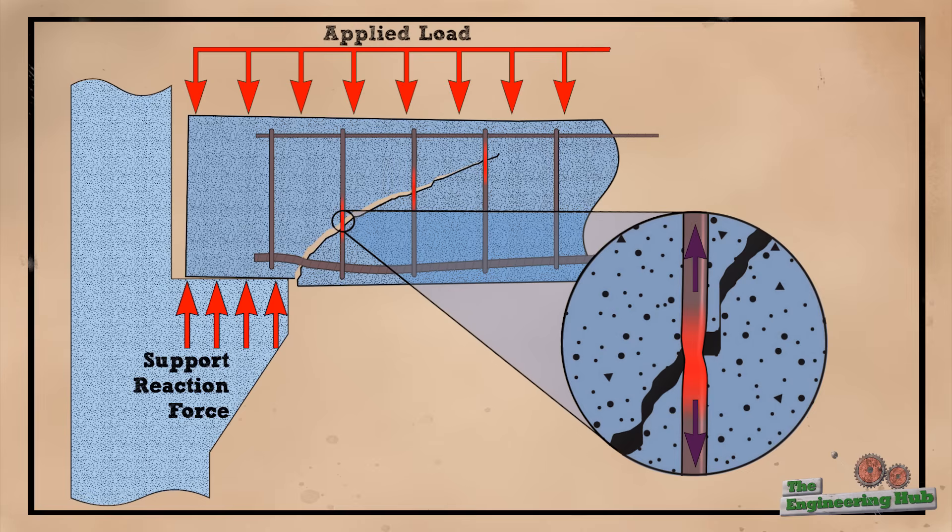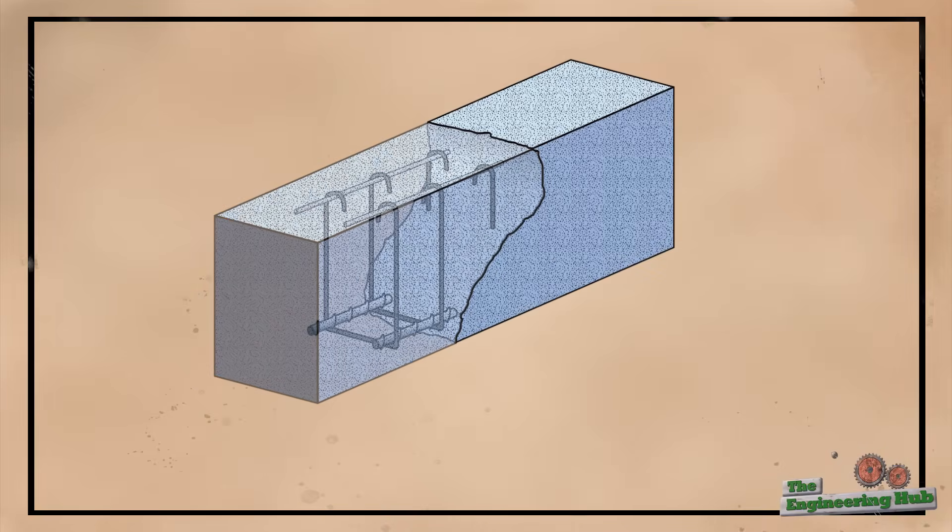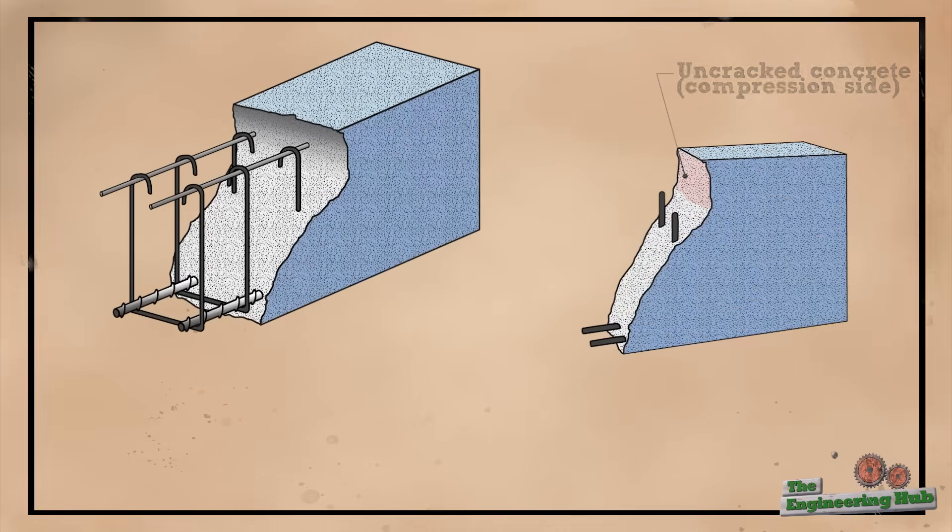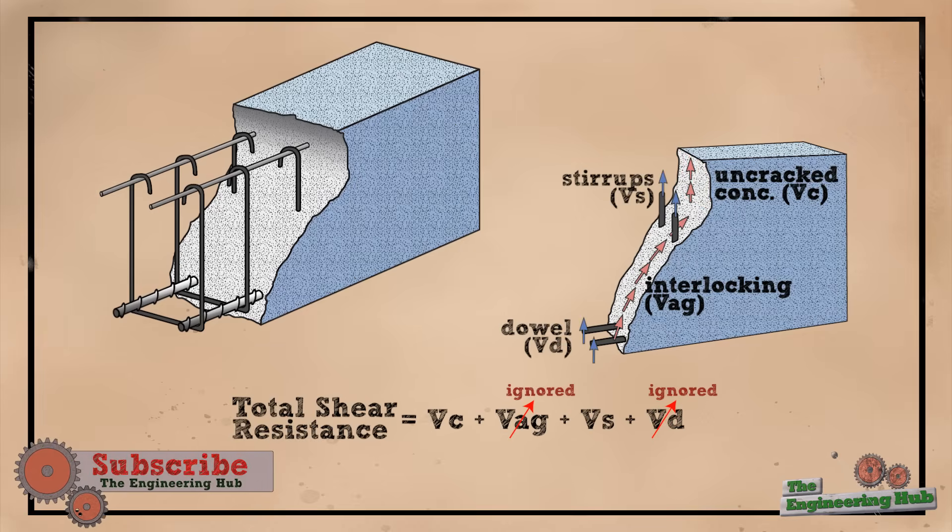Interlocking tends to lose its resistance due to the widening of the crack and therefore it is unreliable and is ignored in the calculation of the shear capacity of the beam. In fact, the only concrete shear resistance for regular cast-in-place beams comes from the uncracked concrete on the compression side.